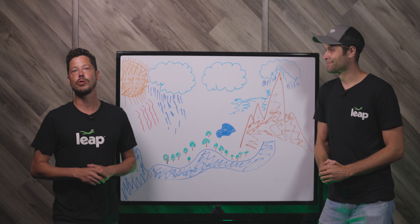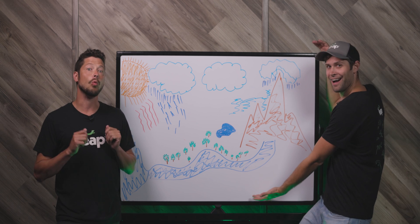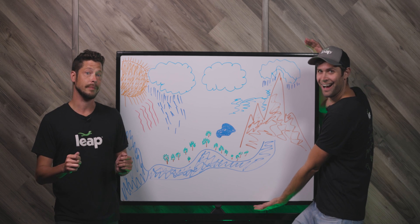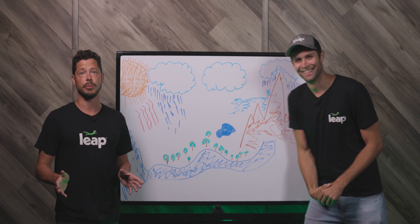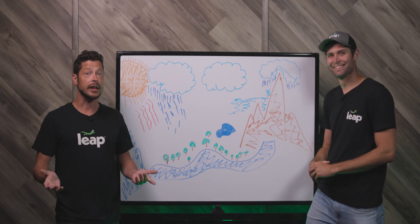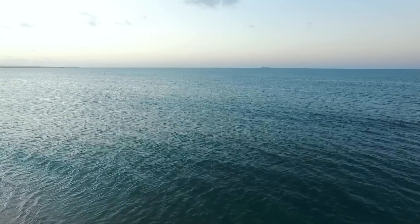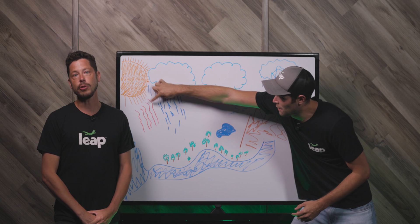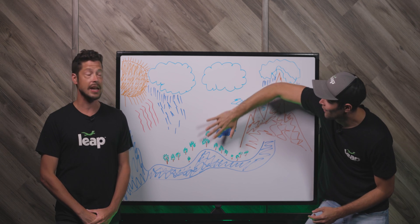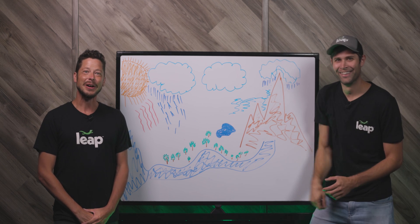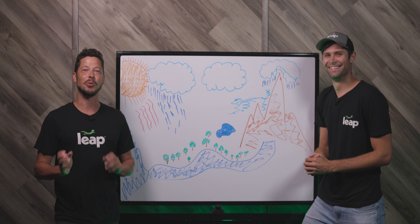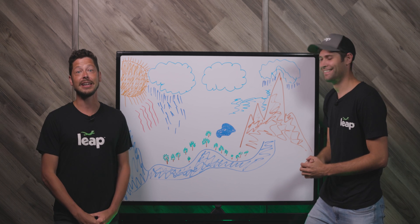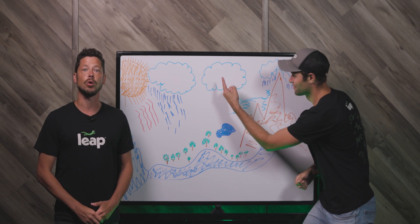Let's go back to our middle school science classes and the water cycle. First, we have water in the environment — outside, it would be in the rivers, lakes, and the ocean. As the water is warmed, it evaporates by turning into water vapor and entering into the air. Over time, as more and more water vapor enters the air, it condenses back into visible water in the form of clouds, dew, or fog.